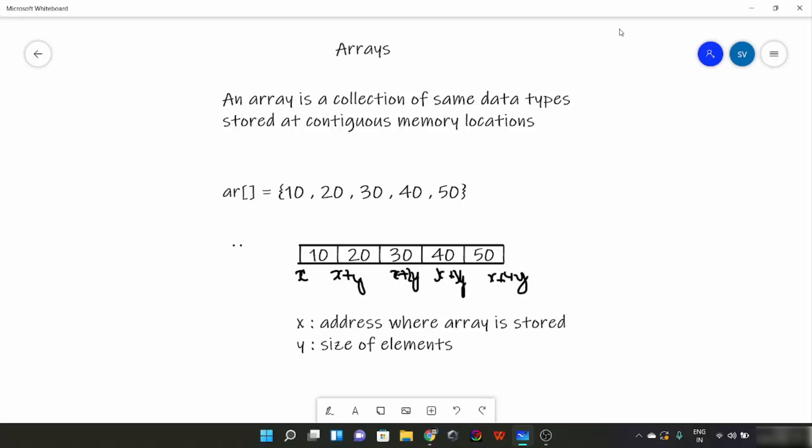Hello everyone, from this video onwards we are going to look at a new data structure: arrays. First, let's talk about the definition. An array is a collection of same data types stored at contiguous memory locations. So an array is basically a container which stores data of the same types, either int or char or anything.